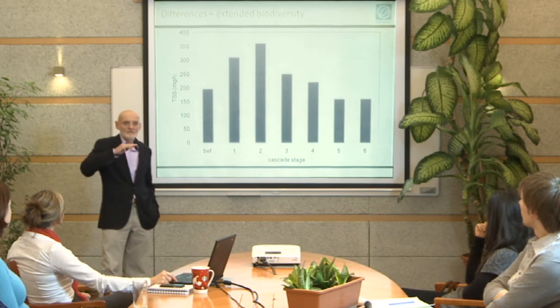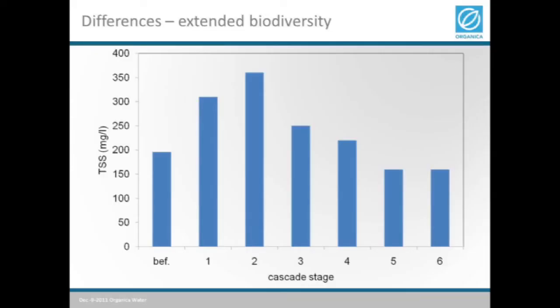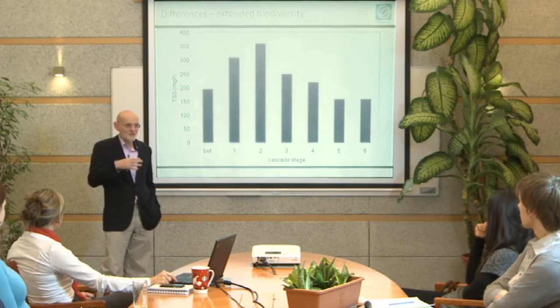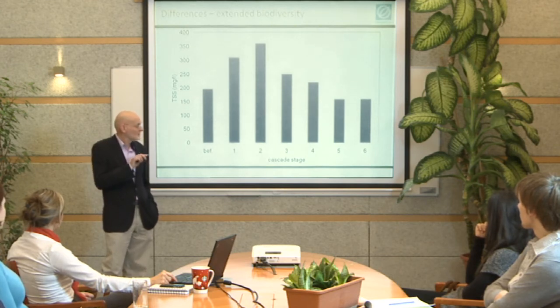The number of organisms in flotation or suspension — a TSS of 150, which is total suspended solids — is just an indication that all the organisms, as mentioned earlier, are attached. The ones that are free-floating represent very, very low numbers.